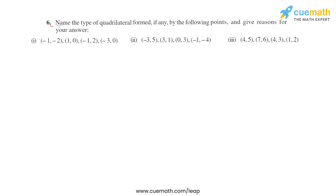In the sixth question, it says name the type of quadrilateral formed, if any, by the following points and give reasons for your answer. Four points are given and we have to tell what type of quadrilateral they are forming, and we also have to give the reason — why is it a square, parallelogram, or rhombus. We will use the distance formula to find the sides of the quadrilateral and the diagonals, then determine what type of quadrilateral it is.